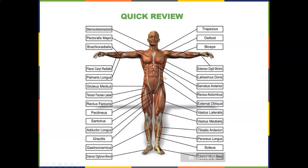As soon as I say serratus anterior, you should know it right away. We've covered lats, extensor digitorum minimi, biceps, delts, traps, sternocleidomastoid, pectoralis major, brachioradialis, flexor carpi radialis, palmaris longus. Now we're going to talk about glute med, TFL, rectus, pectineus, sartorius, adductor longus, gracilis, gastroc, extensor digitorum brevis, soleus, extensor hallucis brevis, peroneus longus, tibialis anterior, vastus lateralis, vastus medialis, and external obliques.